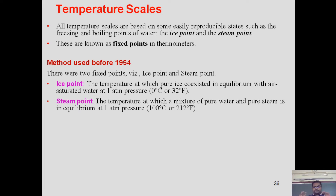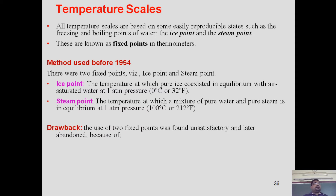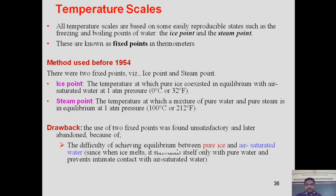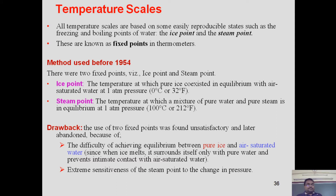The steam point is the temperature at which a mixture of pure water and pure steam is in equilibrium at one atmospheric pressure. There were two main drawbacks with these two fixed points. First, it is difficult to achieve equilibrium between pure ice and air-saturated water, because when pure ice melts it is surrounded by water and air cannot surround the ice. Second, steam is very sensitive to pressure change — if pressure changes by one bar, the steam temperature varies by 300 Kelvin or more.